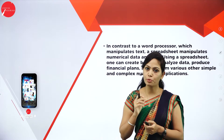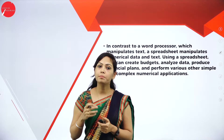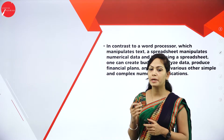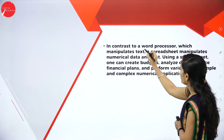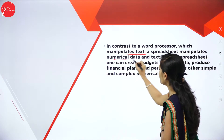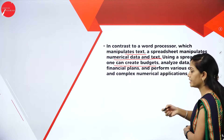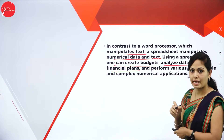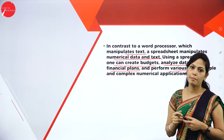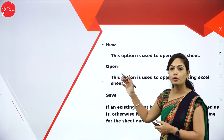In MS Word or Word Processing, you can edit the text and create a new document. But in MS Excel, you can perform numeric calculations — from simple to complex. A Word Processor manipulates text, while a spreadsheet manipulates numerical data and text. Using a spreadsheet, one can create budgets, analyze data, produce financial plans, and perform various other calculations. Today, I will explain how to open a new document, an existing document, and how to save the document.